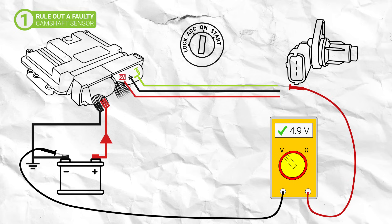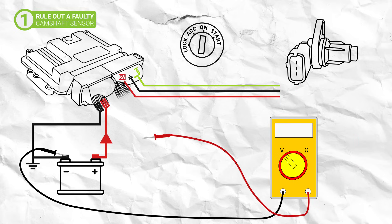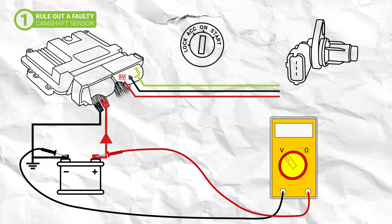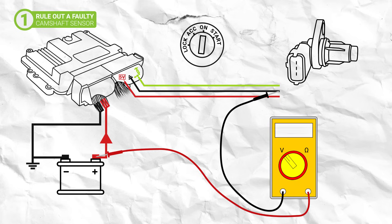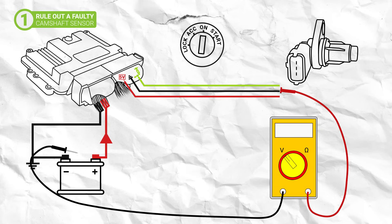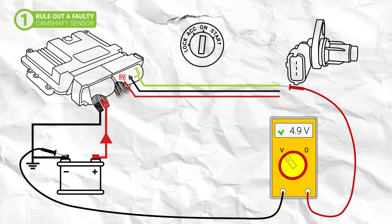Then check the ground connection by placing the red probe on the positive side of the battery and the black probe on the ground terminal at the sensor connector. The multimeter should read battery voltage of around 12.6 volts. If all of these readings are correct, then the sensor has a good ground and is receiving the correct voltages. So the problem must be with the camshaft position sensor itself.